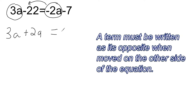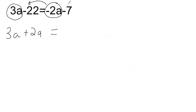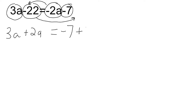On the right side, we're going to write all of our constants — the numbers that do not have a variable. We already have a constant of negative 7 on the left, so we write that as is. We only change the sign when we move across the equal sign. So we're going to take this negative 22 and move it to the other side, which gives us positive 22. Now we can combine everything on the left: that gives us 5a. On the right, negative 7 and positive 22 gives us positive 15.